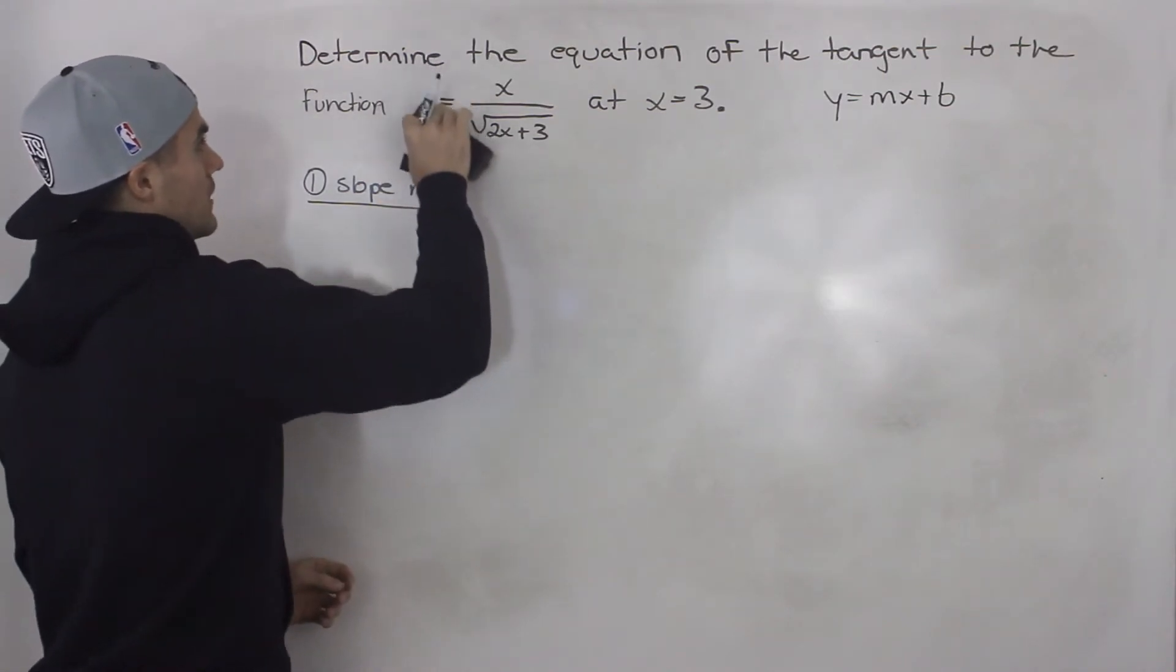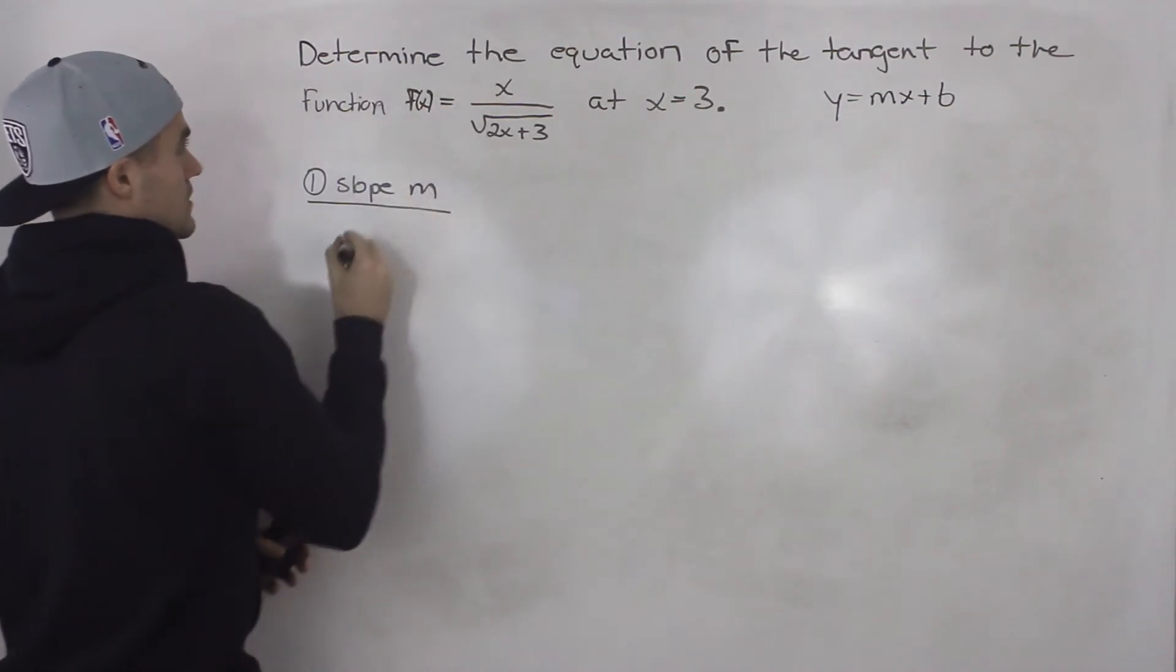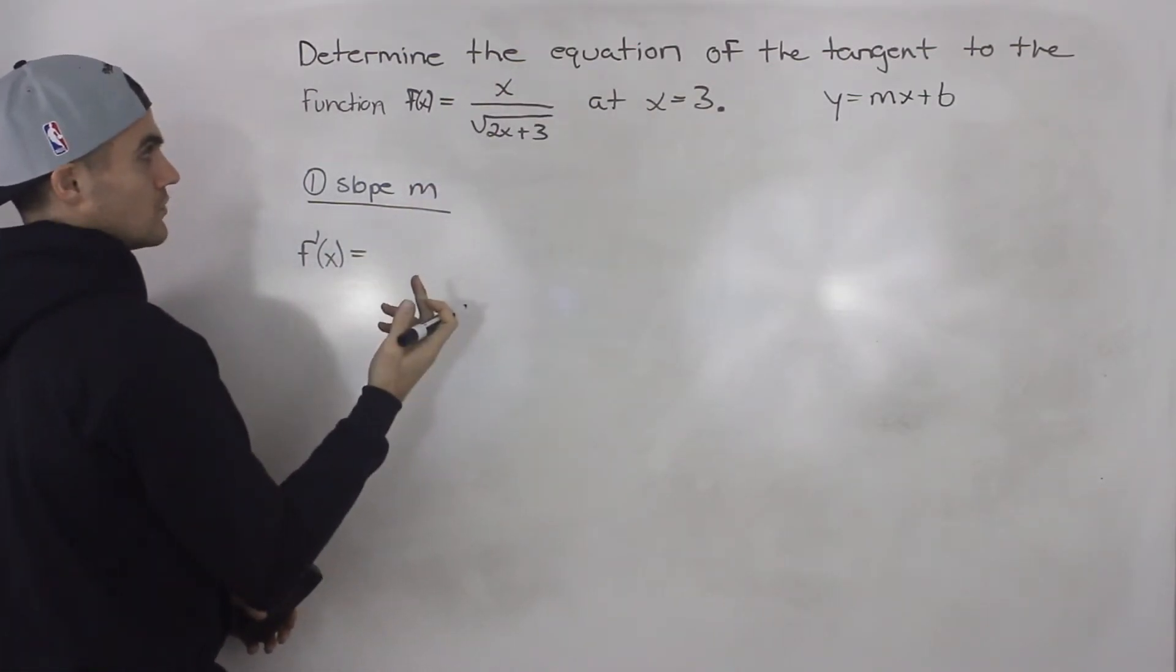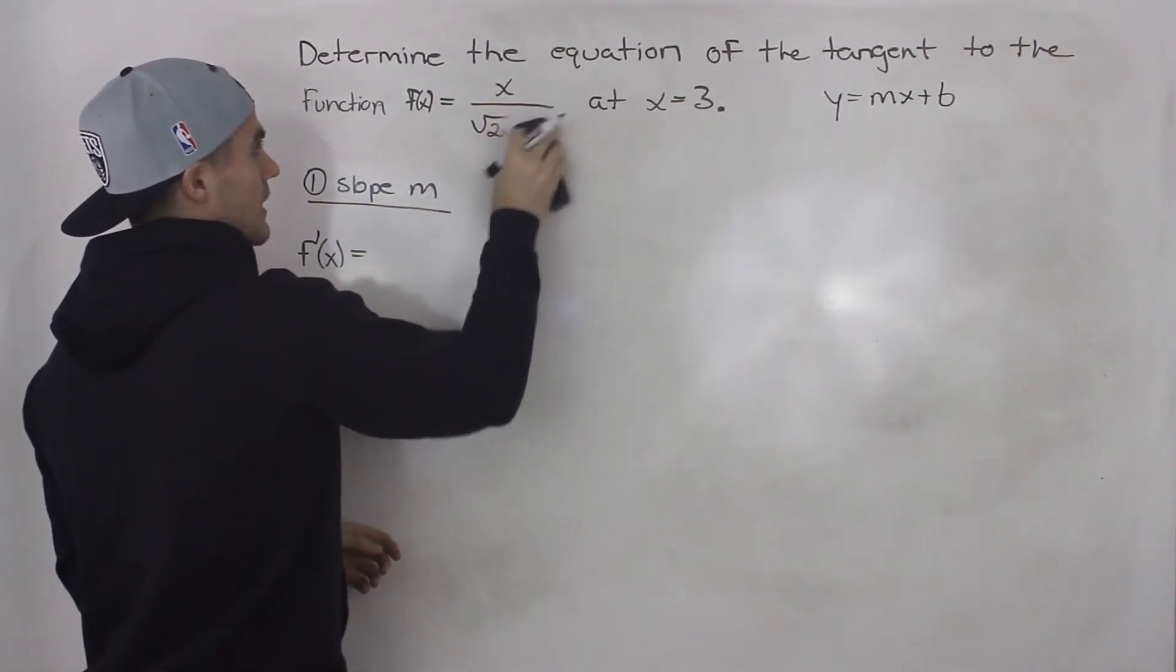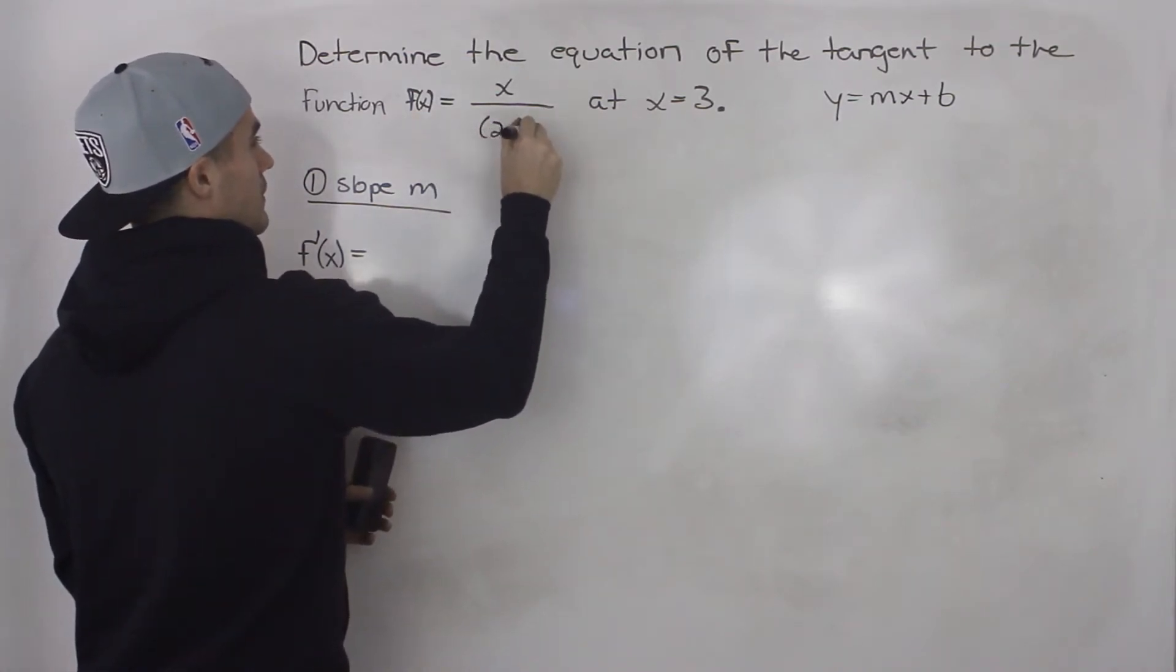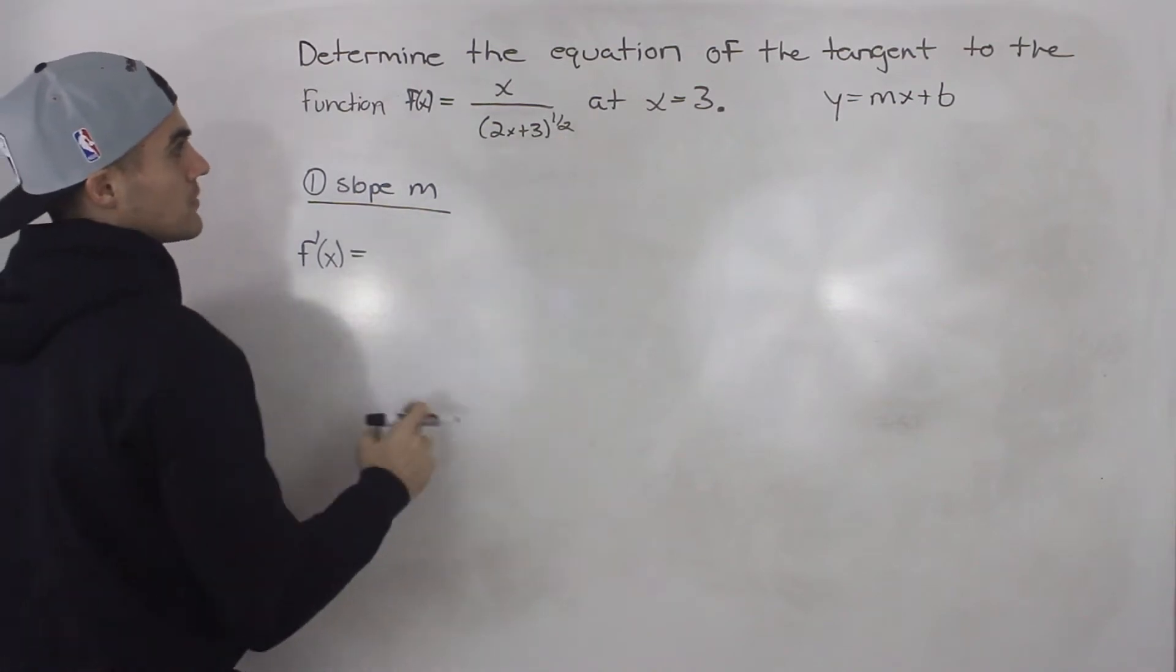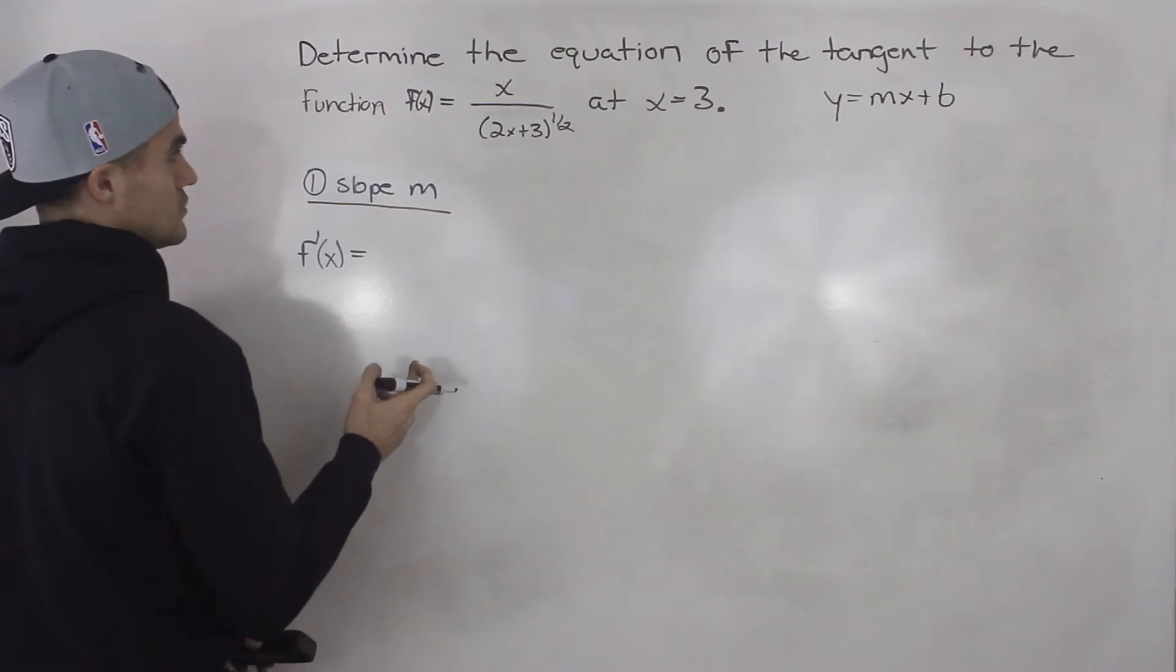So I'm going to rewrite this y here as f of x. Then the derivative of that function, because it's a rational function, I'm going to apply the quotient rule. So this square root of 2x plus 3, we can also rewrite that as 2x plus 3 to the power of a half. I like to just work with rational exponents. I like to switch all radicals I see to rational exponents always before taking any derivatives.